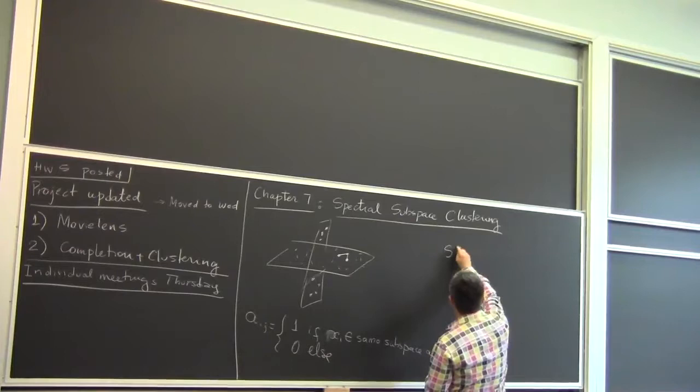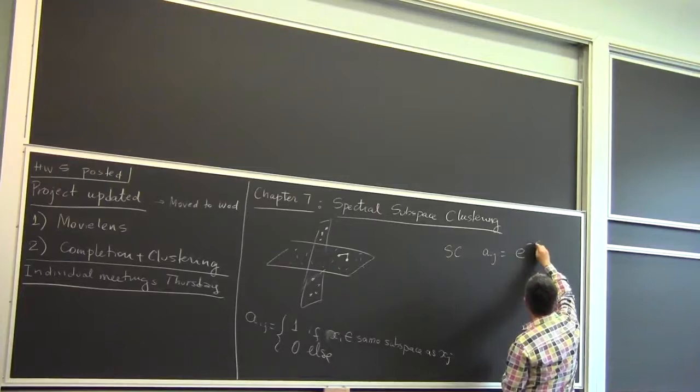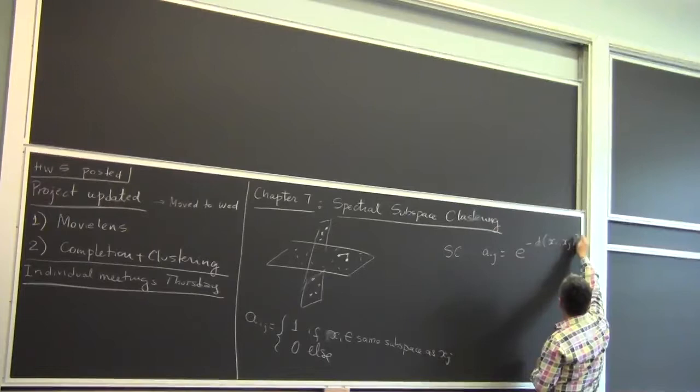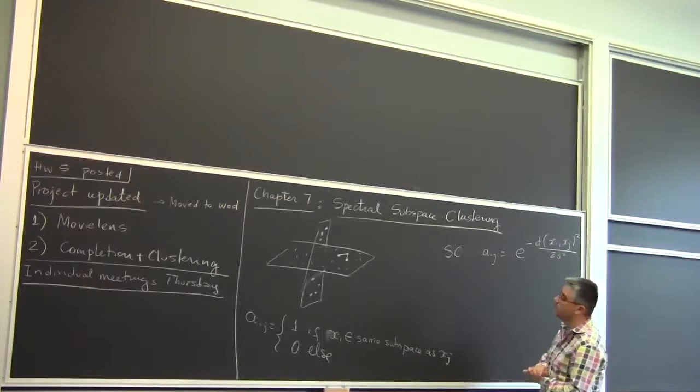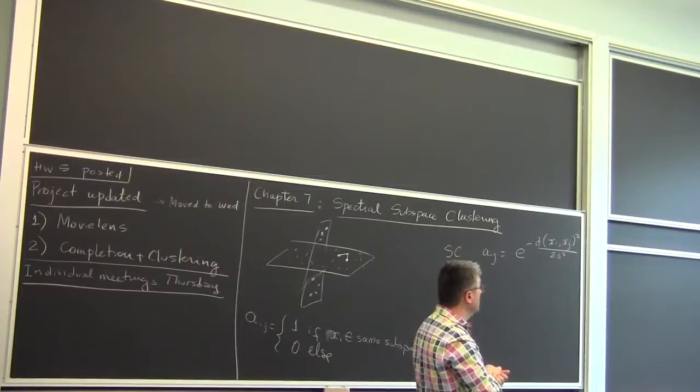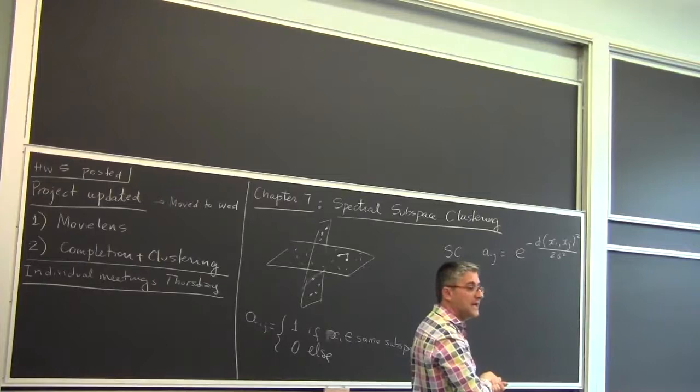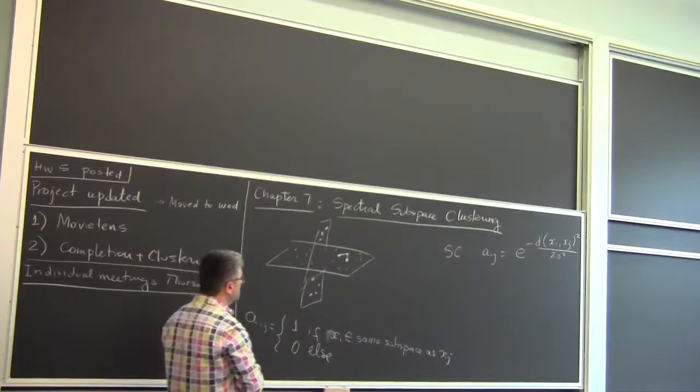In standard spectral clustering, what we did was to say that A_ij is e to the minus the squared distance between x_i and x_j, maybe normalized. That meant if two points are close to each other, you get a high affinity, and if they are far from each other, you get a low affinity.